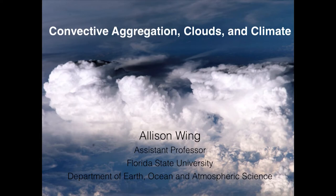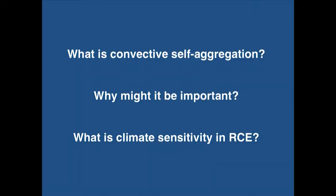Today I'm going to talk about some recent work I've done on convective aggregation, clouds, and climate. This is showing an example of cloud clusters in the tropics — a photograph from the International Space Station. The three questions I want to address are: what is convective self-aggregation, why might it be important, and what is the climate sensitivity of radiative convective equilibrium, which involves the balance of radiative heating, cooling, and convective heating? This work is very much in keeping with the legacy of Charney and Lorenz, focusing on very basic physical mechanisms in our climate system.